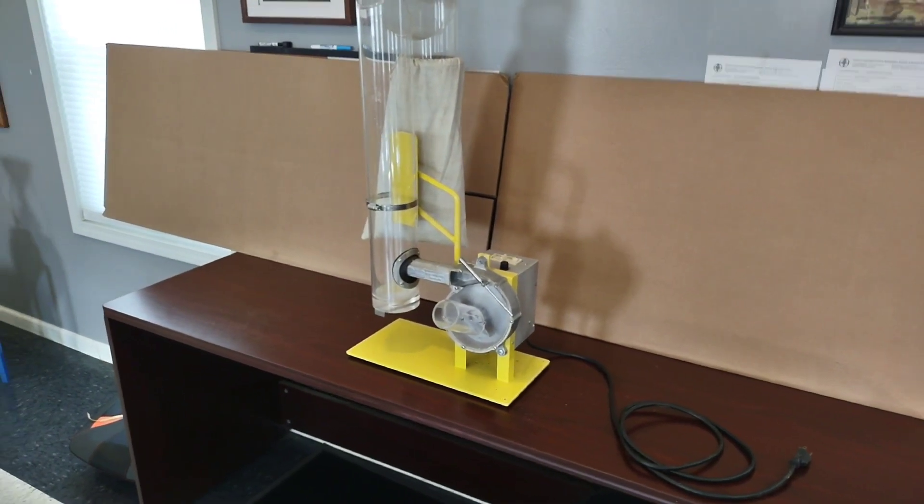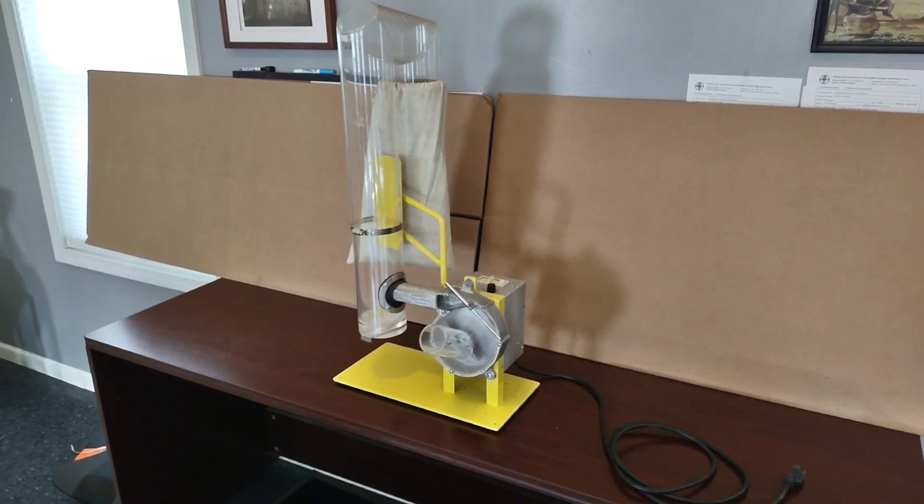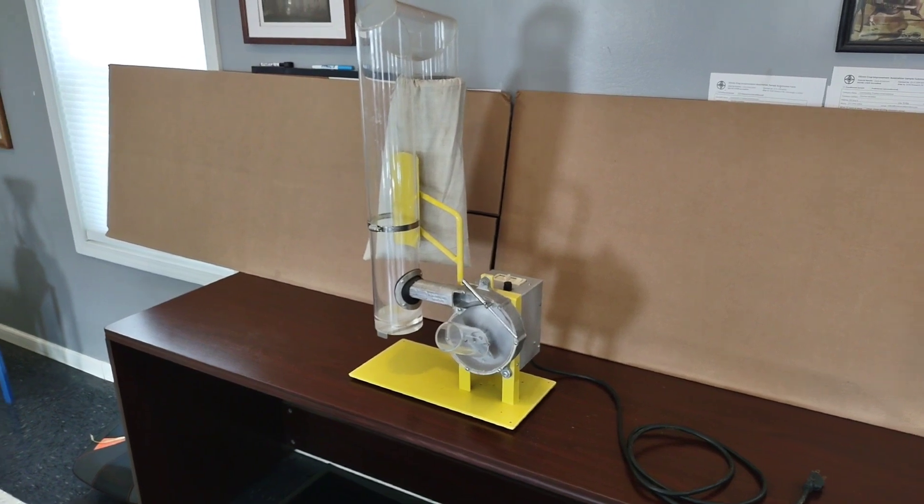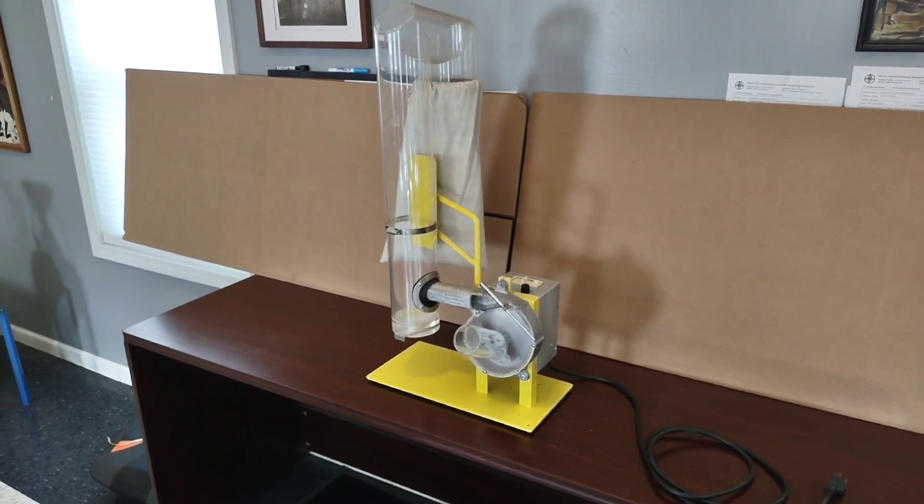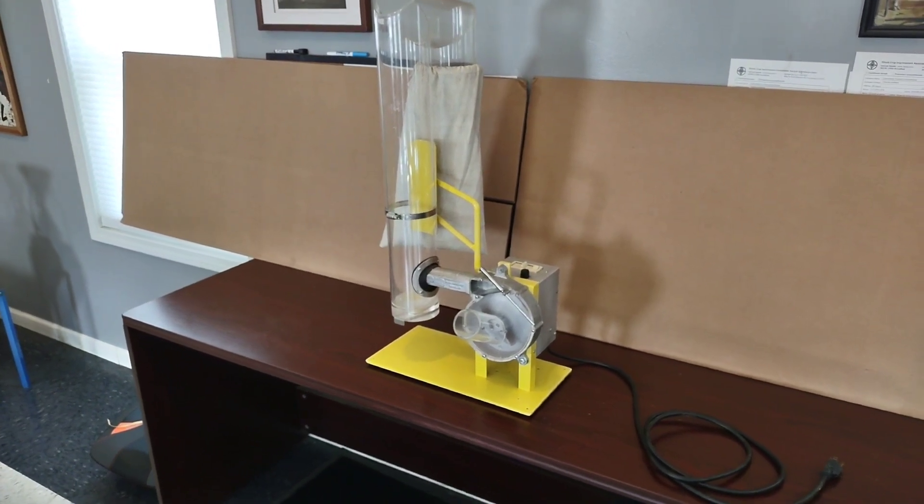Today we are looking at a Precision Machine Company wheat head thresher. This thresher is designed for plant breeders to thresh wheat or other small grains, one to six heads of wheat at a time.